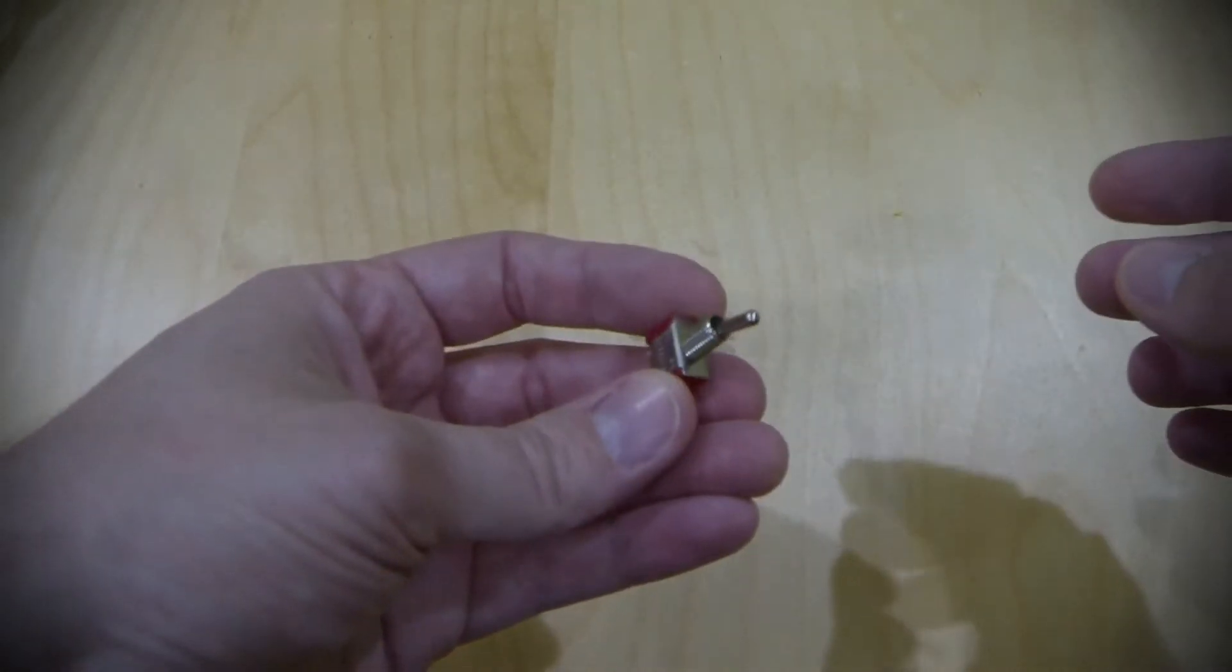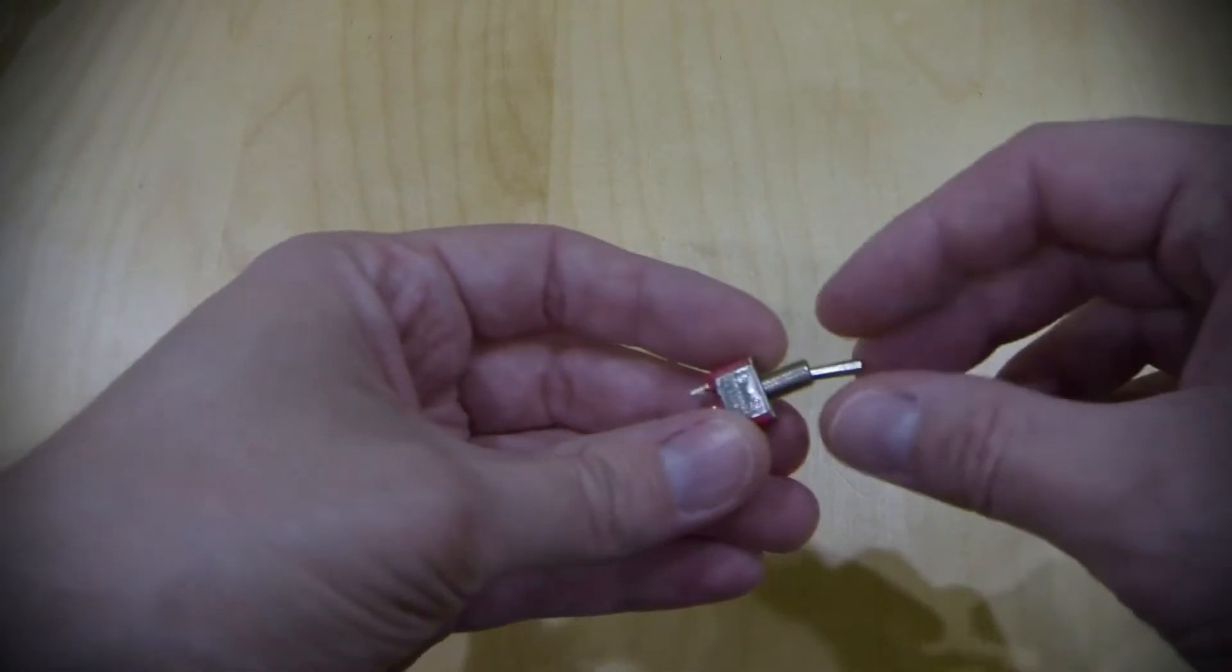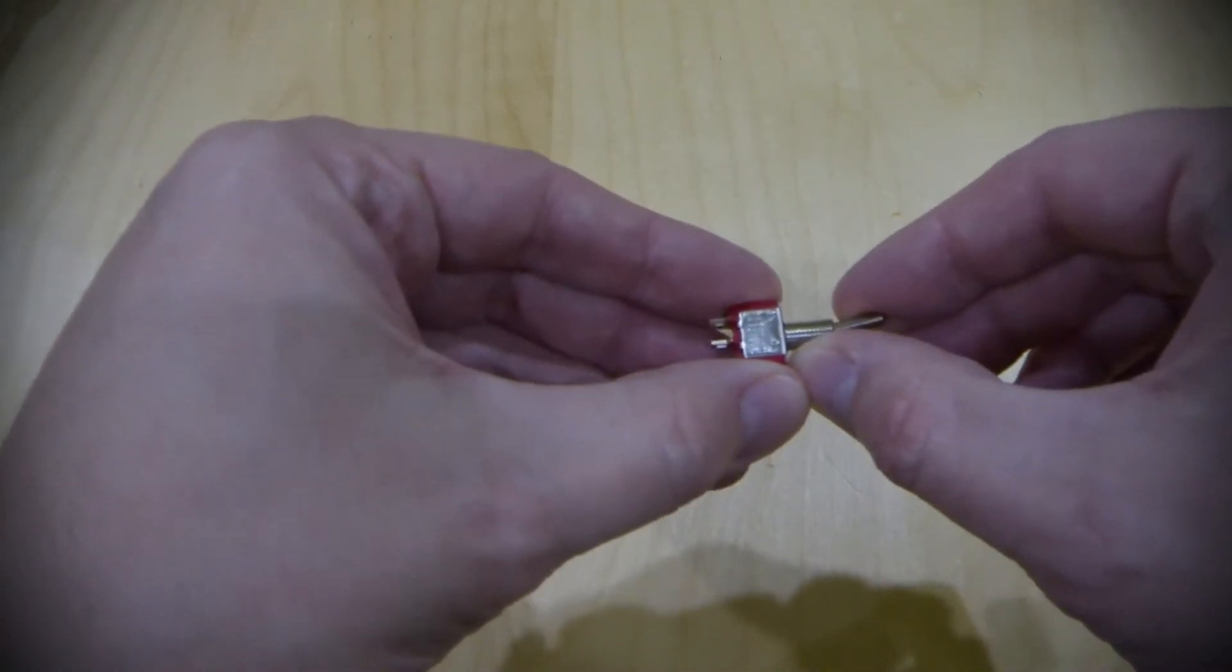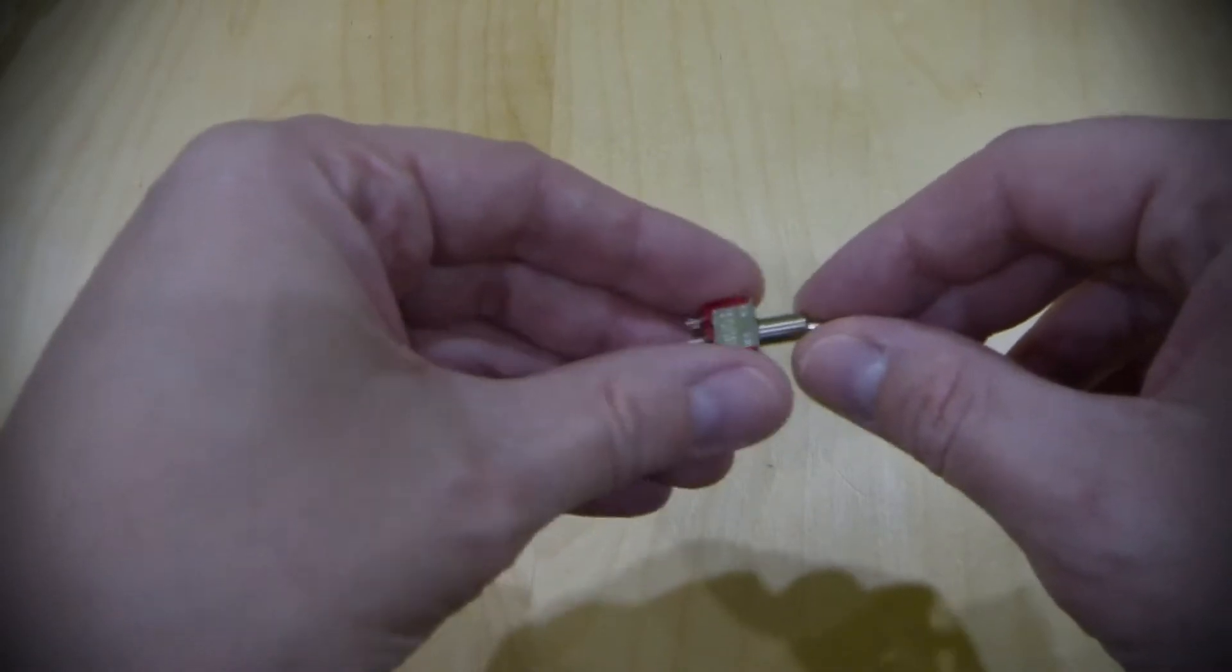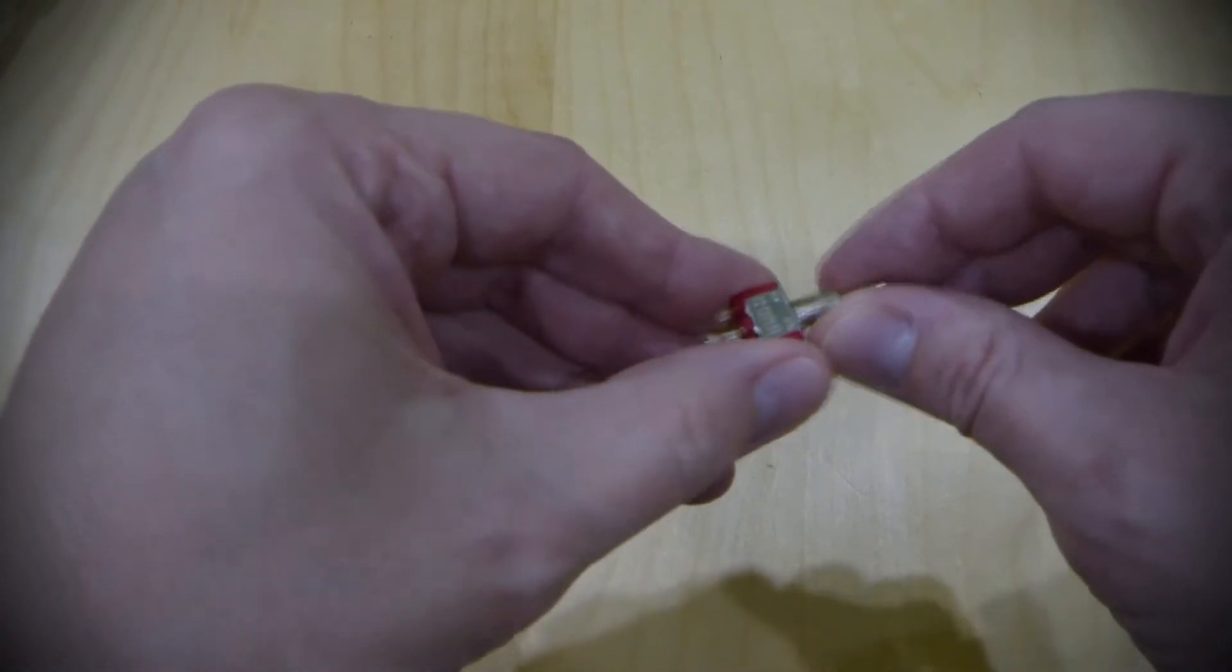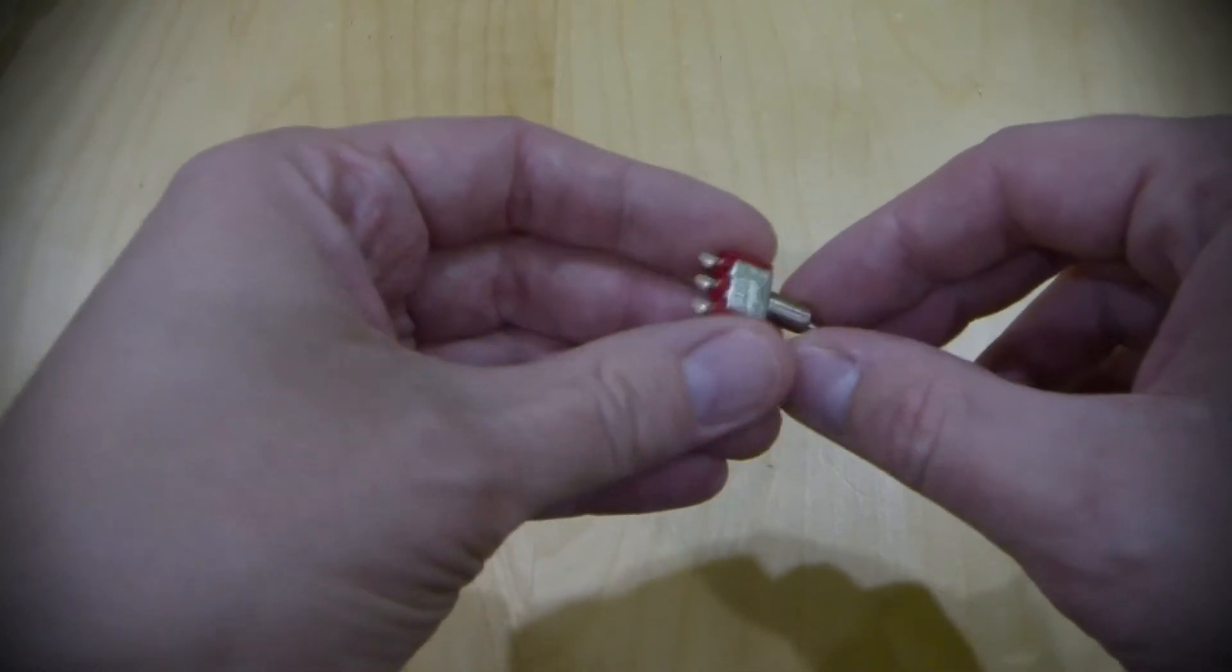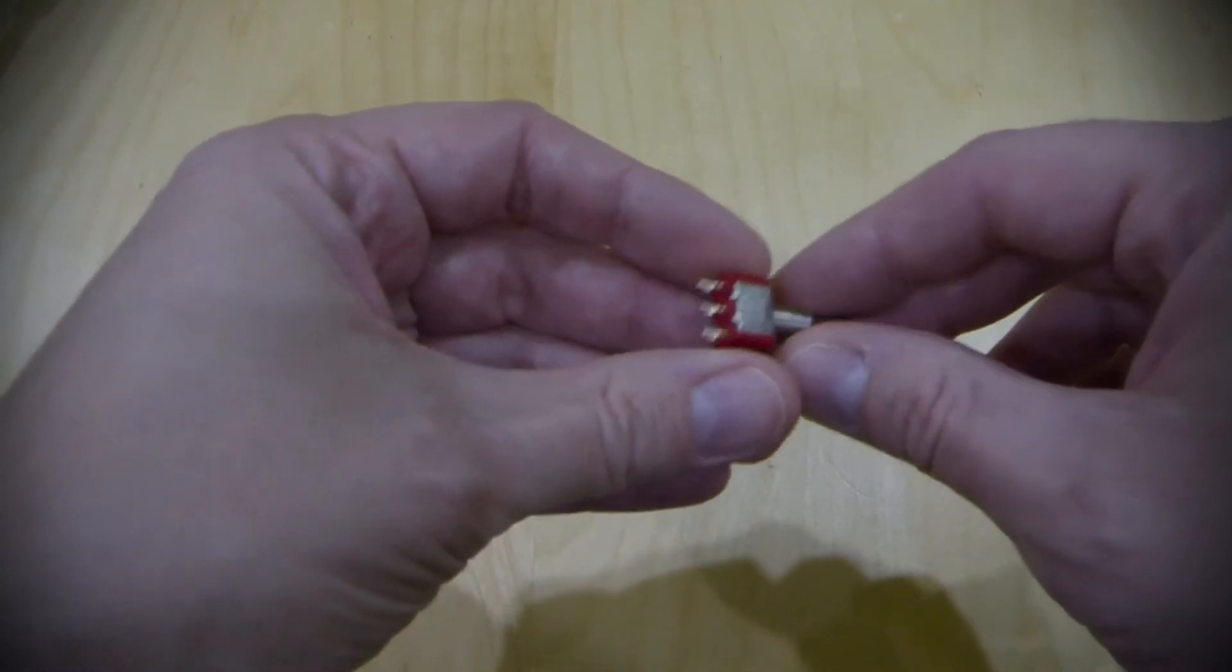This is what we would call a mini toggle switch. They're really popular for modification on guitars. There are several different types. You may see some four letter descriptions of these, such as SPDT or DPDT.